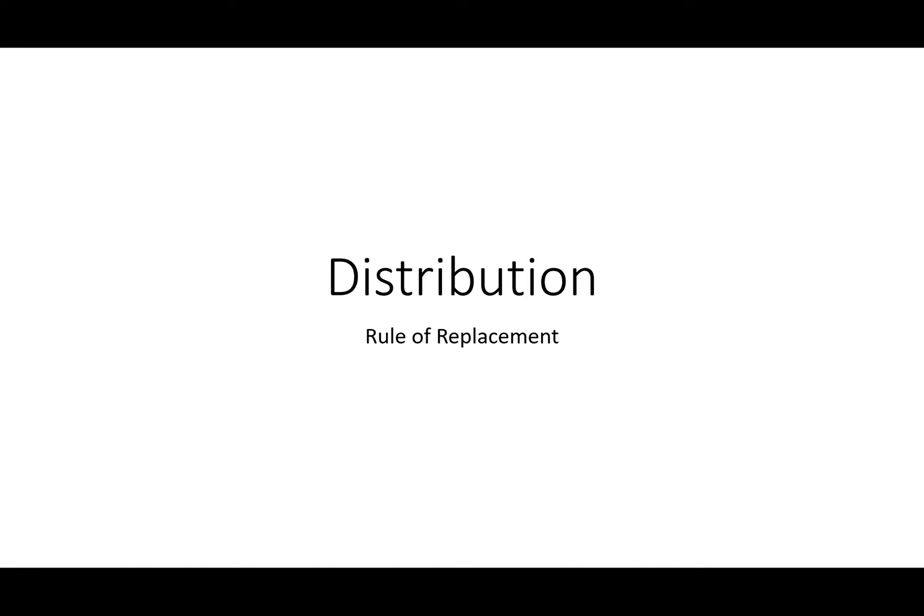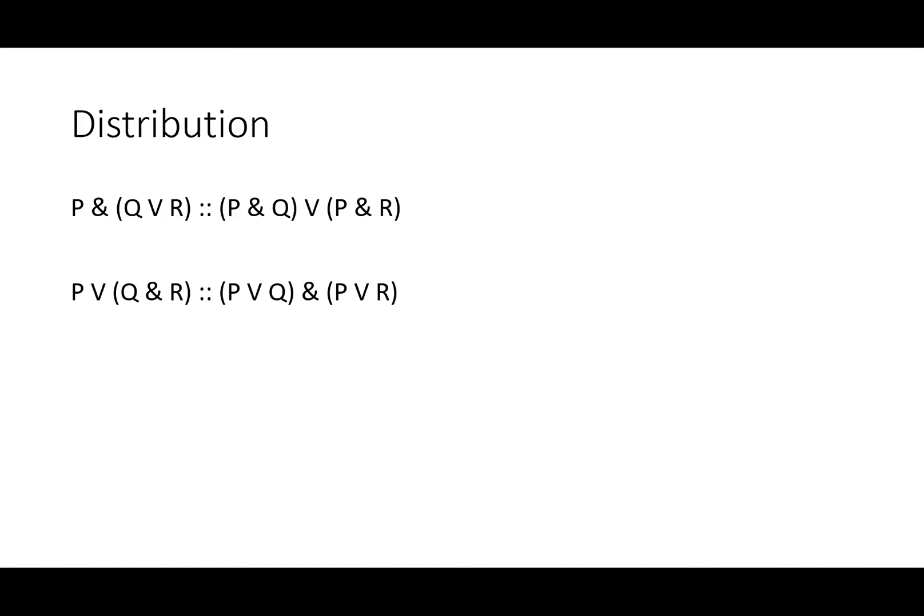Distribution is a rule of replacement. Like DeMorgan's laws, commutativity, and associativity, distribution is really two rules in one. The first says that P AND (Q OR R) is logically equivalent to (P AND Q) OR (P AND R). The second law says that P OR (Q AND R) is logically equivalent to (P OR Q) AND (P OR R).